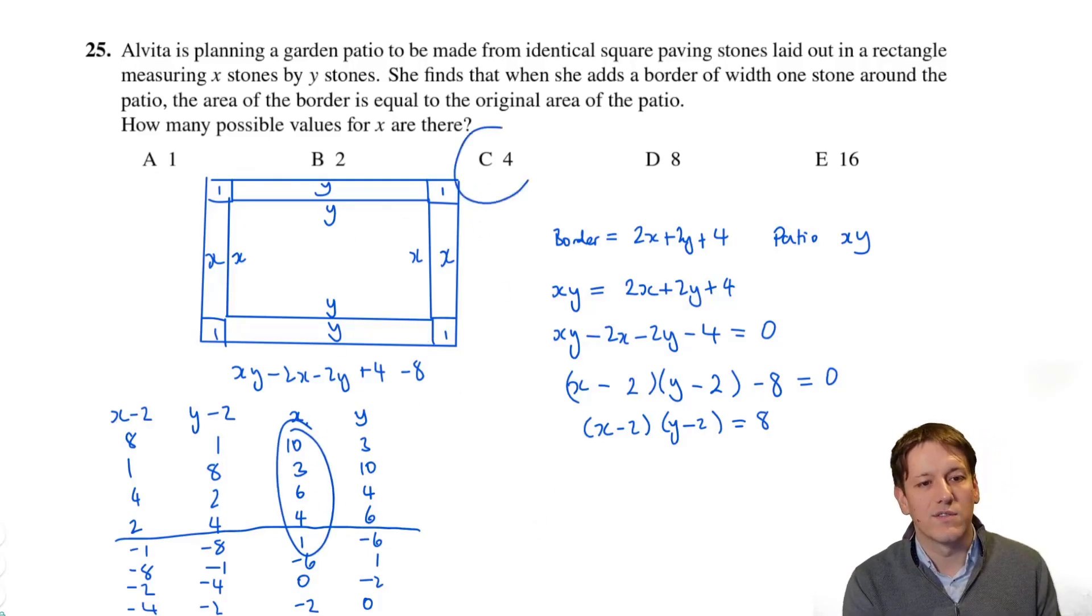So only the ones above the line here are useful to us, and the answer is that there are four different values of x, these ones here, 10, 3, 6, and 4, and so the answer is c. Very well done if you got that right.